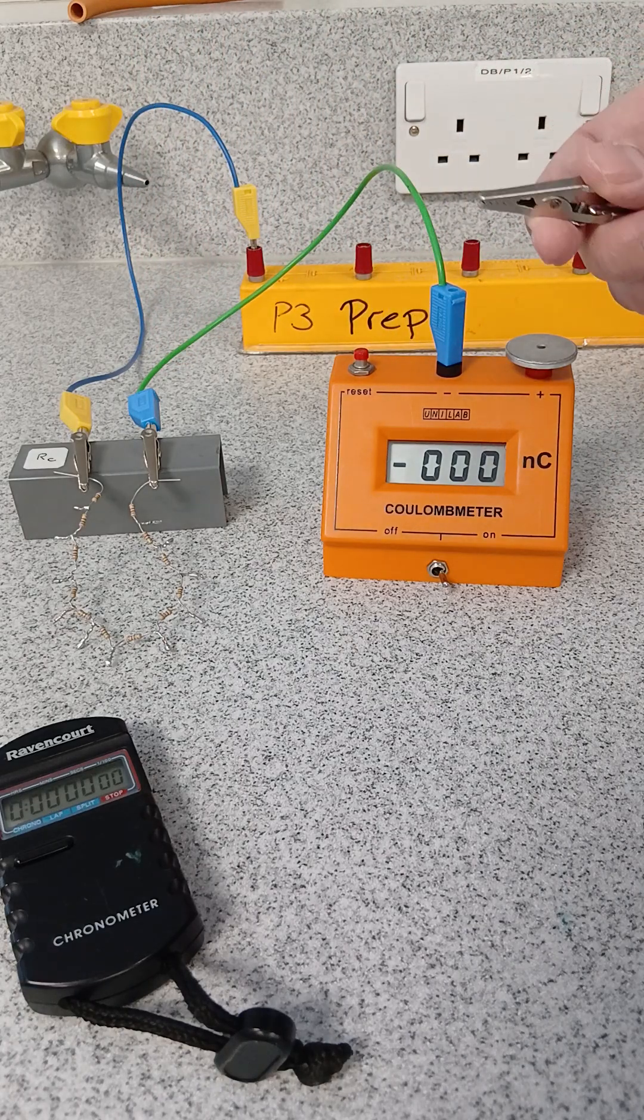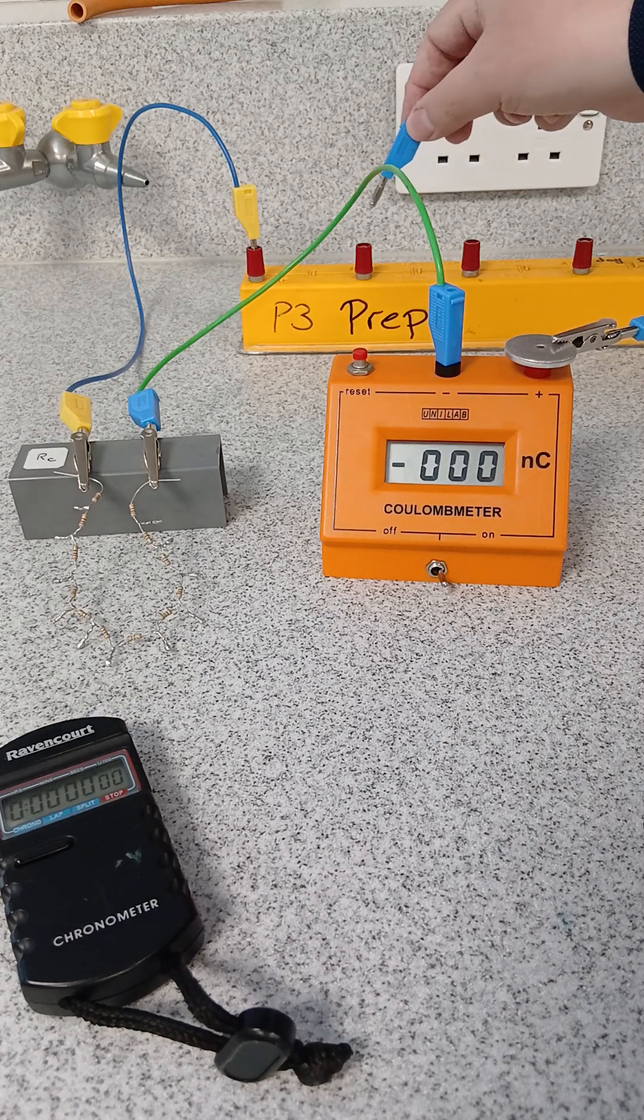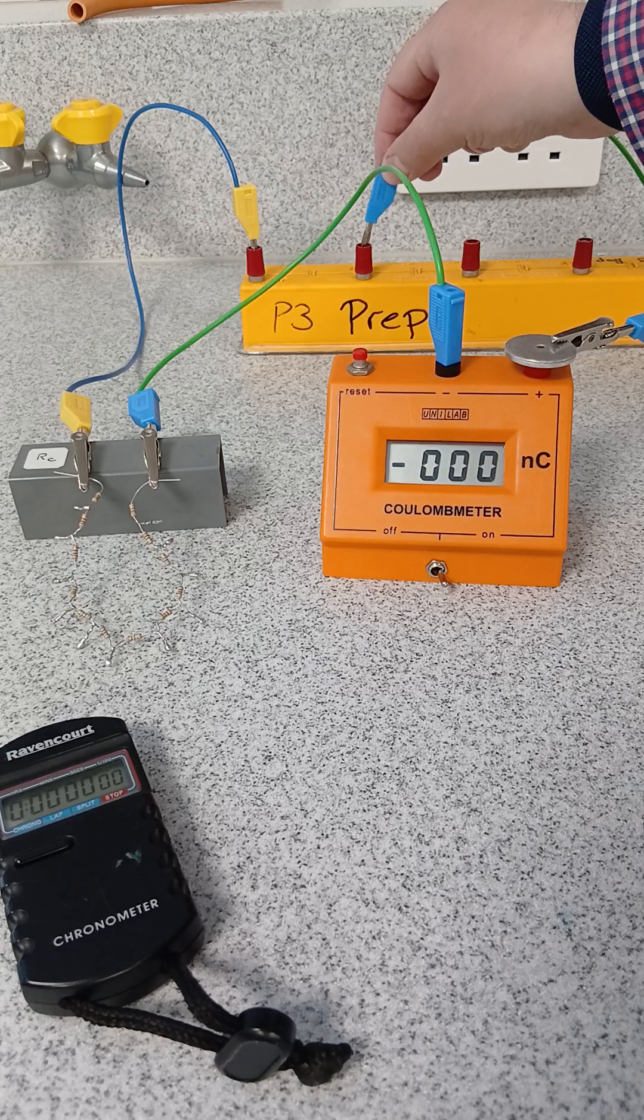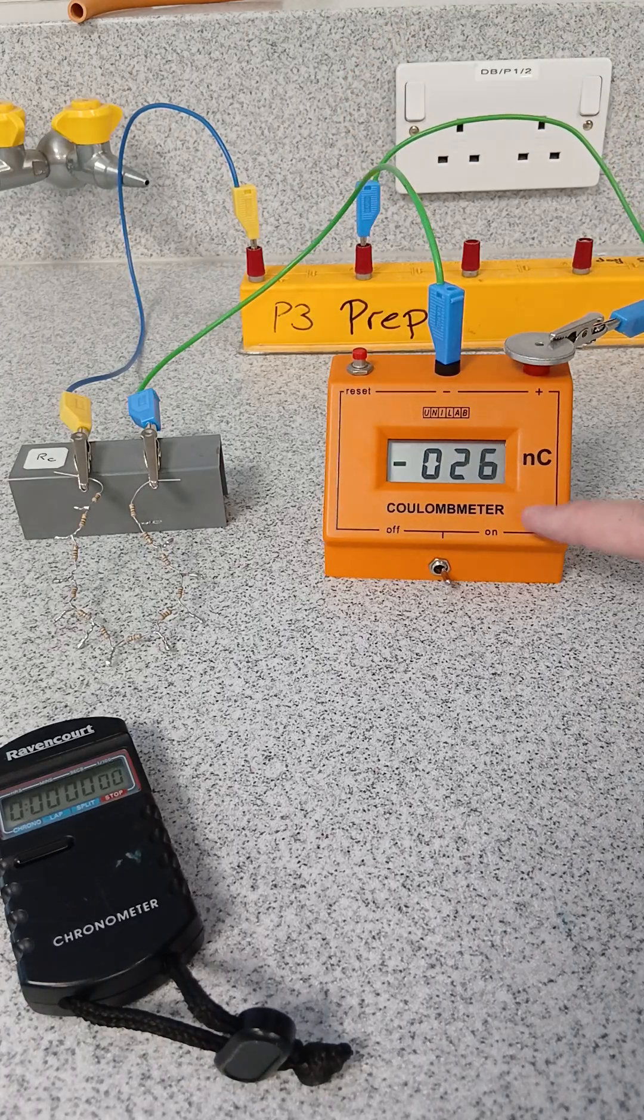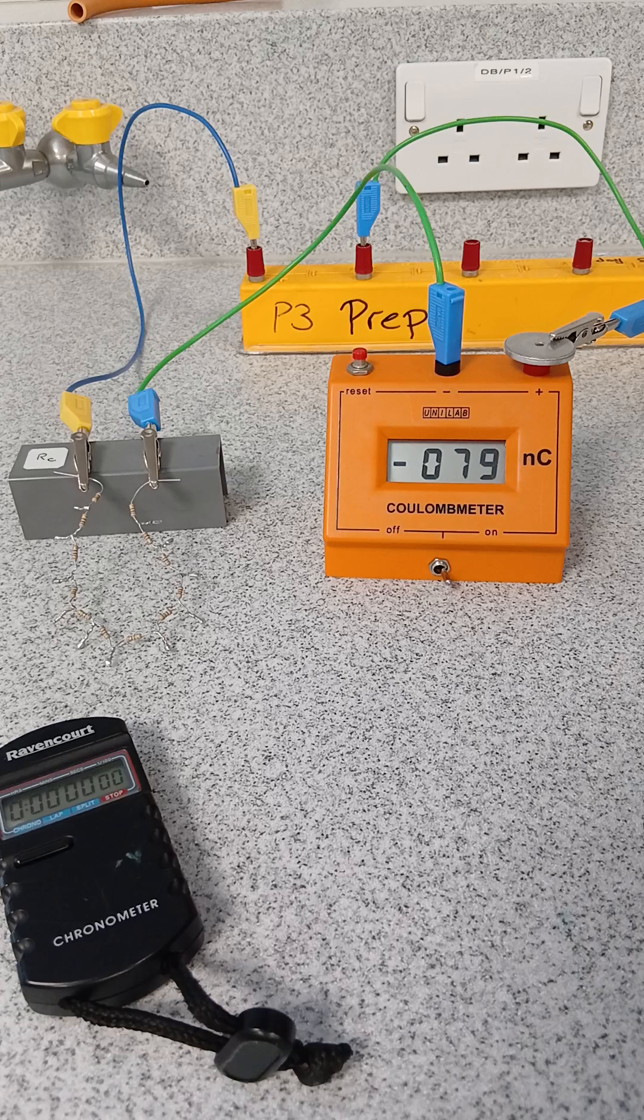So the other connection here, I'm going to use a crocodile clip. And when I make the connection here, I'll complete the circuit. And look what happens. You see the charge flowing through the Coulomb meter as the electrons flow through.